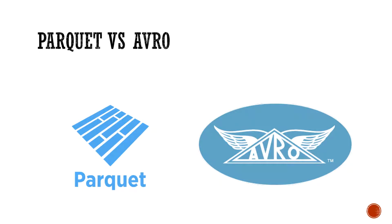While Parquet and Avro store data in binary format, which means not human readable, they have considerable differences in the way the data is formatted. There are other technical features that make them different. We will explore some of the key features to understand them and make an appropriate decision for different use cases.